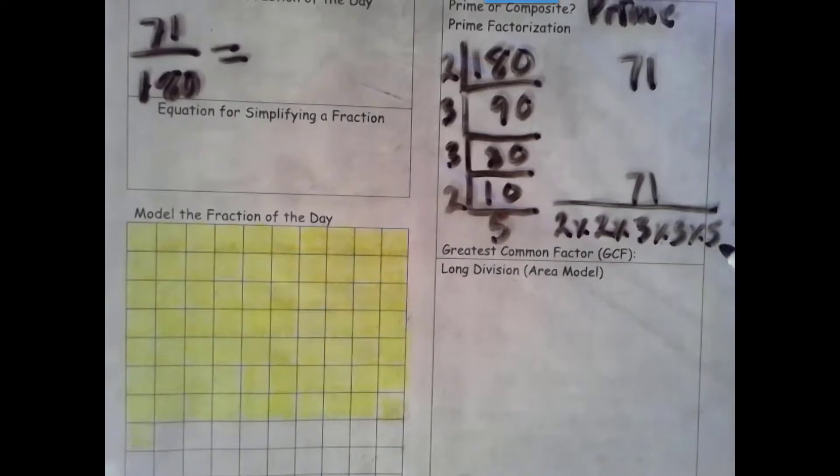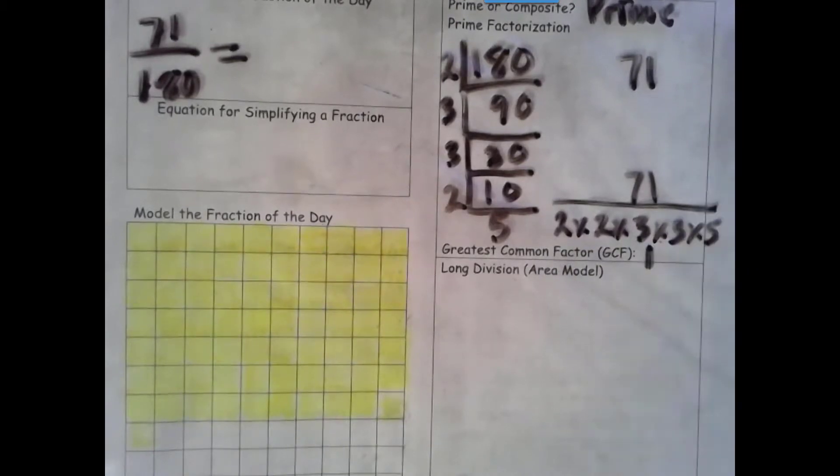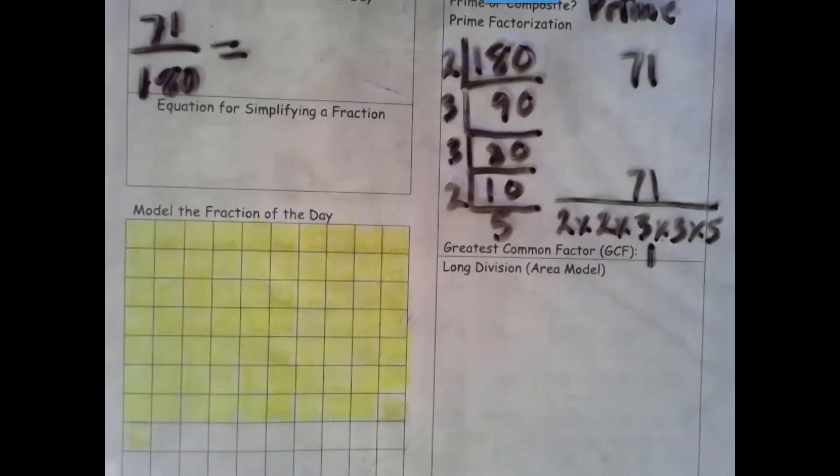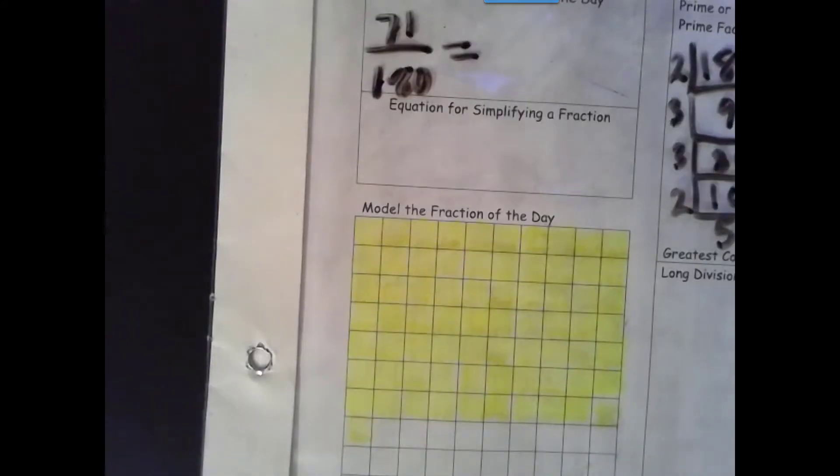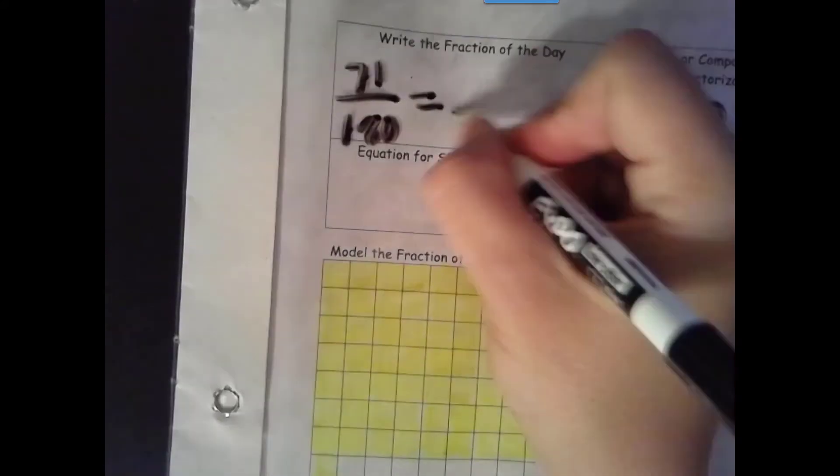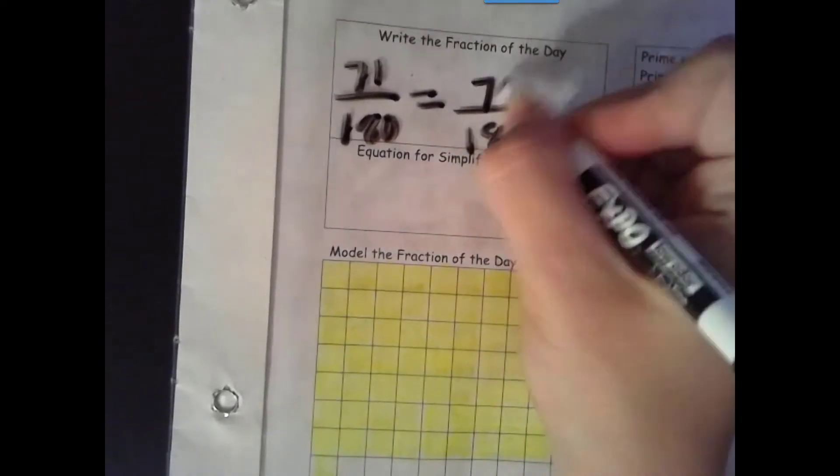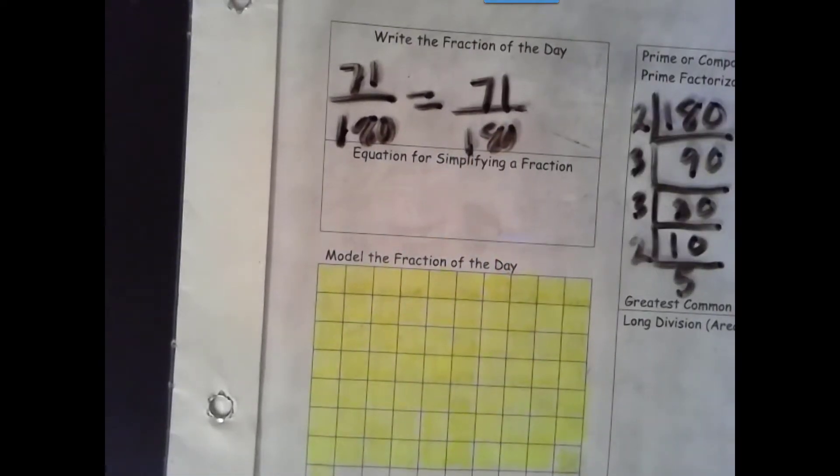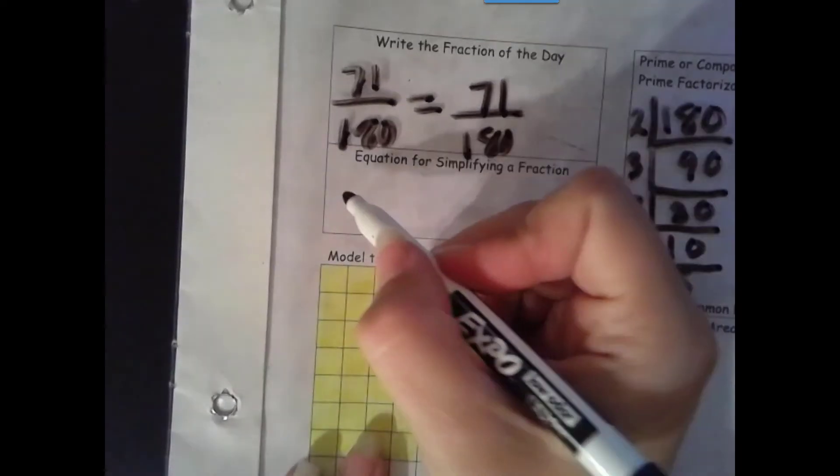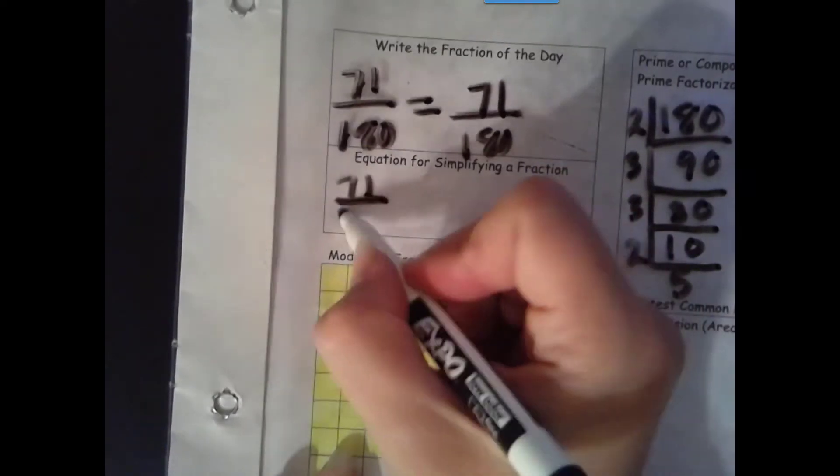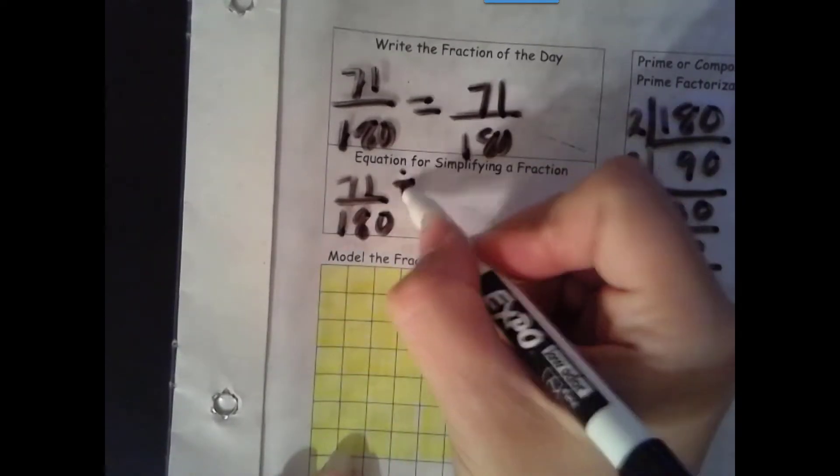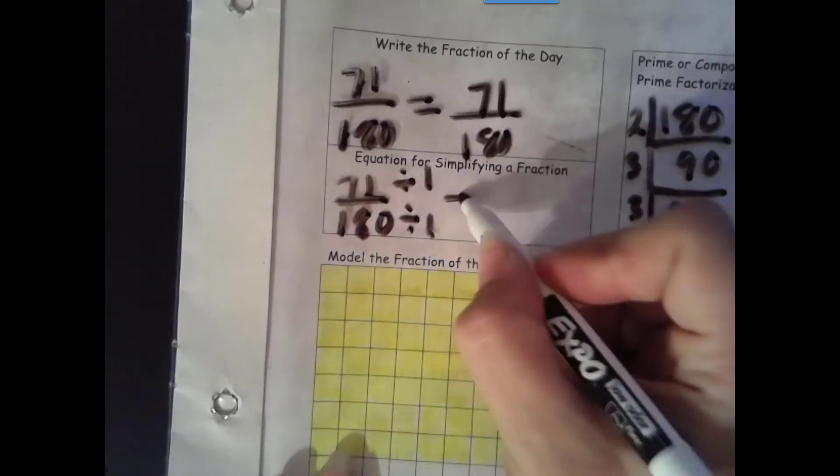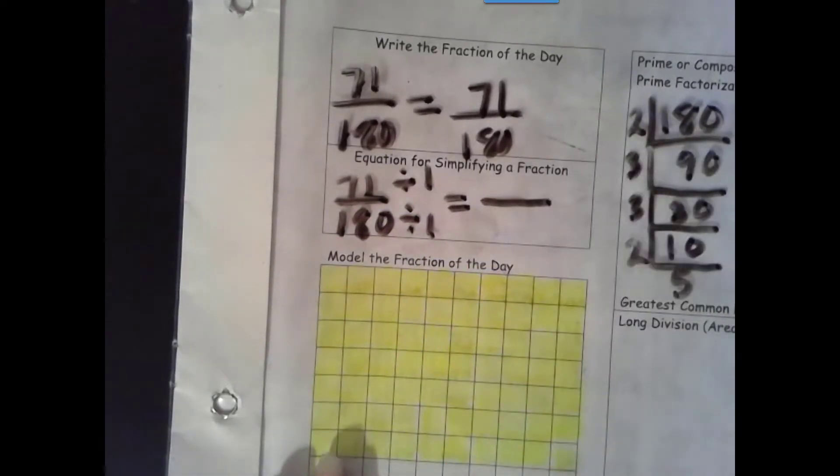So is there anything in our numerator and denominator? That means our greatest common factor is one. Let's make our groups of one. Done. How many total groups of one do we have? 180. How many are shaded in? 71. We still want to prove it with our algorithm. Remember, algorithm's just a step-by-step way of solving a problem.